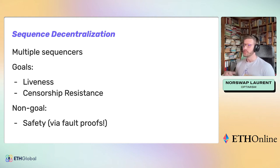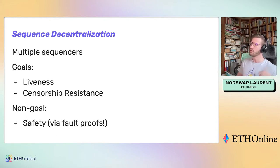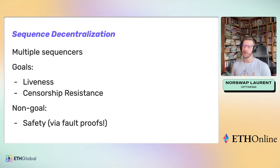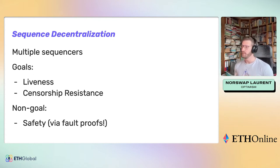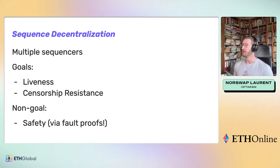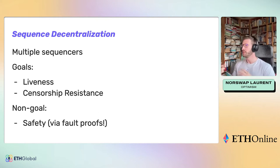What are our goals when we say sequencer decentralization? There are two goals. One is liveness — such that if a sequencer were to go down, the L2 chain keeps progressing anyway. The other is censorship resistance: making sure that OP Labs cannot make your transaction be censored forever, and that nobody can force us to do that either. The non-goal of this is safety. Optimism is safe, but the mechanism we use to ensure safety is not this — it's the fault proofs. Even with a single sequencer, the chain is safe and nobody can steal your money. But decentralization is important for censorship resistance and liveness.